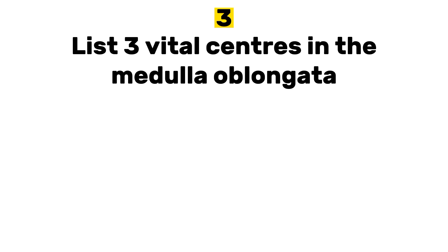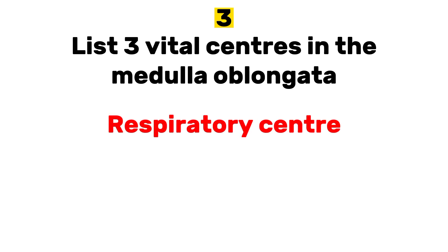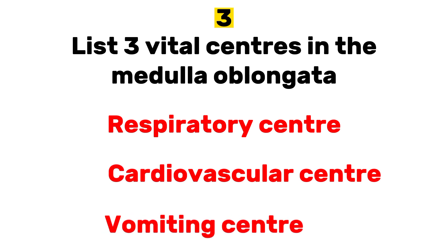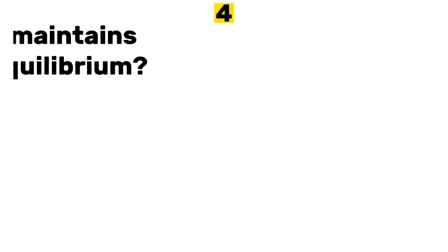Number three: list three vital centers in the medulla oblongata. Answer: respiratory center, cardiovascular center, and vomiting center.